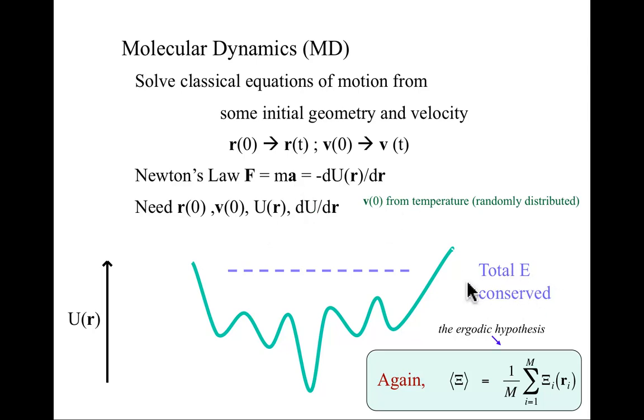Total energy is conserved in this case. It's going to vary between potential and kinetic energy. The ergodic hypothesis says that if you follow a trajectory long enough, you will sample phase space in an energy-weighted way, a properly energy-weighted way. And so that once again, you will evaluate an expectation value as an average over all the snapshots of your system.